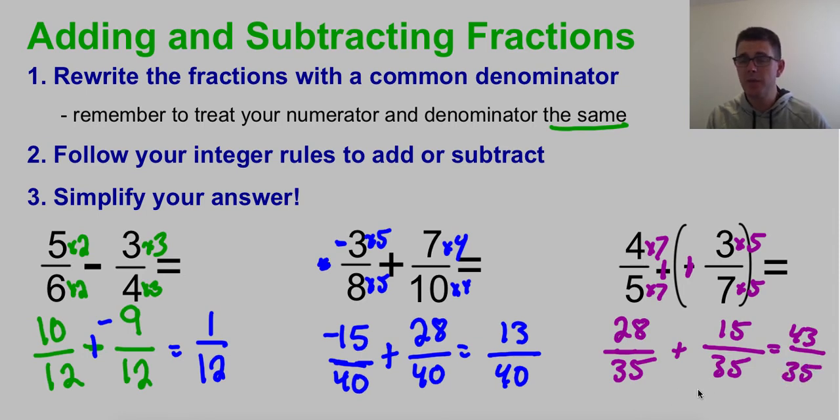In this case, I can't simplify it, but it is an improper fraction. So I want to change it into a mixed number. 35 goes into 43 one time. If I took 35 away from 43, I would have 8 left over. So 1 and 8/35.